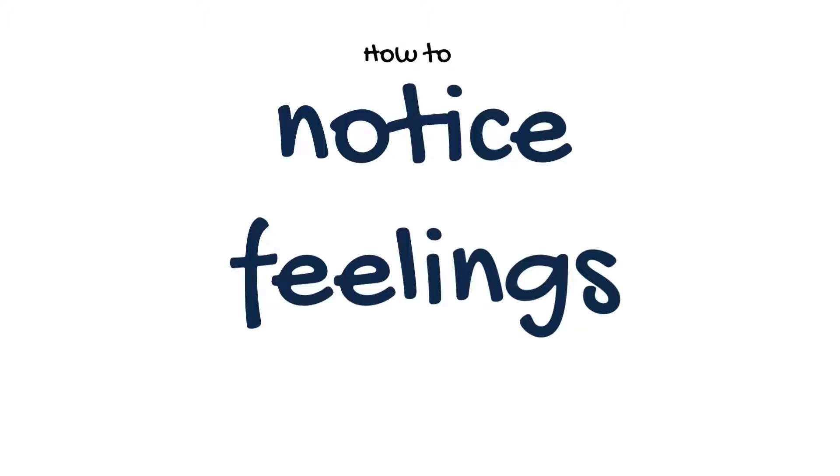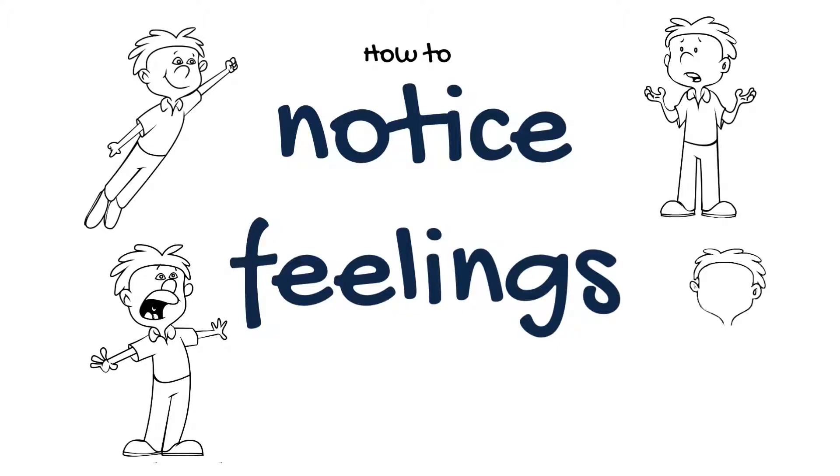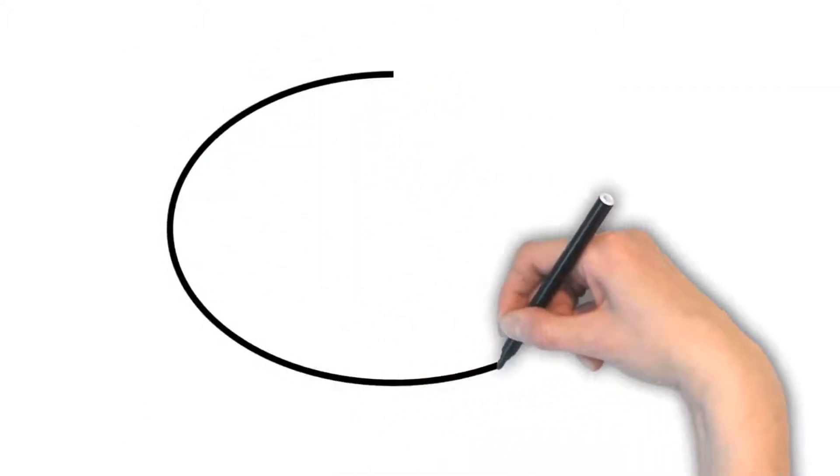There are many ways we notice how we feel. This next activity is one way to explore what's going on for you. I invite you to experiment and see if it works for you. First, we draw a shape on the paper. It can be any shape that works for you.